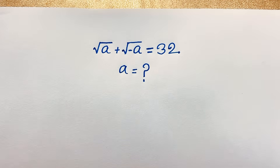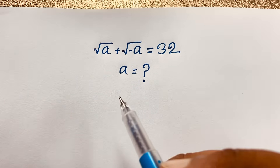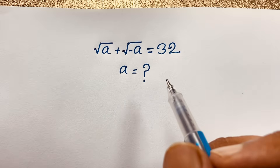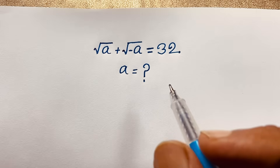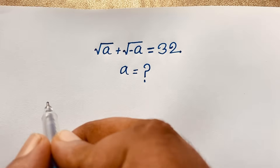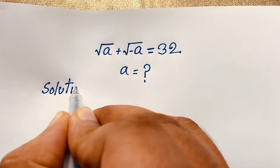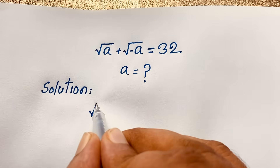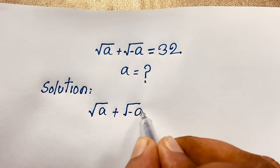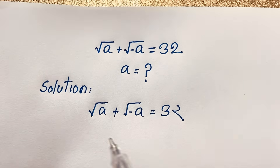Hello everyone, welcome to Russian's classroom. Today we have solved an interesting math olympiad question — it is a German math olympiad question. The equation is: square root of a plus square root of negative a is equal to 32. What is a? Let me show you how to solve this interesting math problem, step by step.